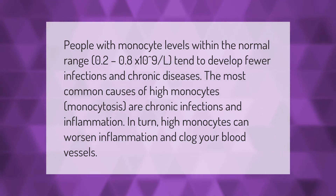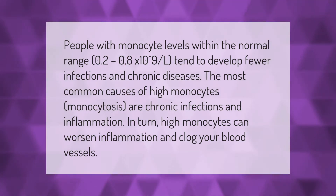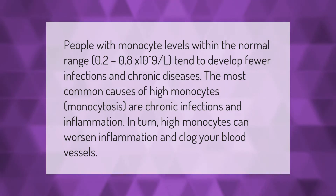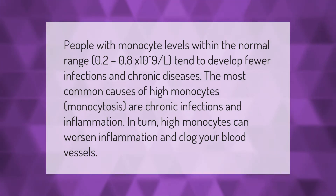People with monocyte levels within the normal range — 0.2 to 0.8 times 10 to the 9 per liter — tend to develop fewer infections and chronic diseases. The most common causes of high monocyte levels, or monocytosis, are chronic infections and inflammation.